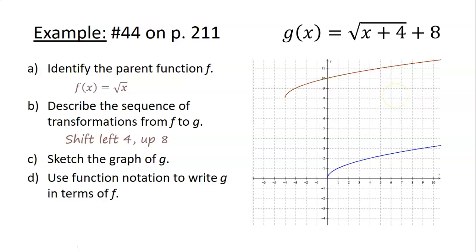And now the last thing it asks us to do is use function notation to write g in terms of f. So g is like if you started with f but replaced x with x plus 4 and then you added 8 to the end of that. So g in terms of f would be that g(x) is equal to f(x + 4) plus 8. So that's how those kinds of problems work. That's what they're asking us for there.